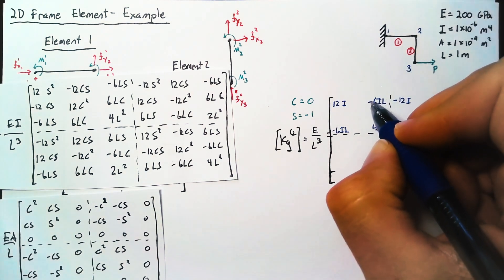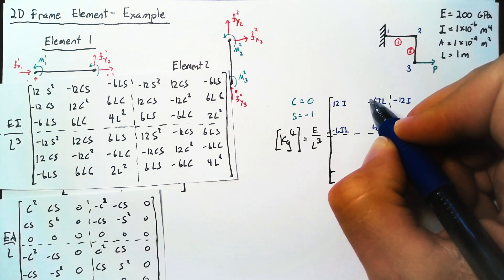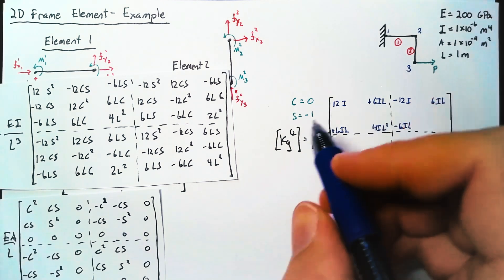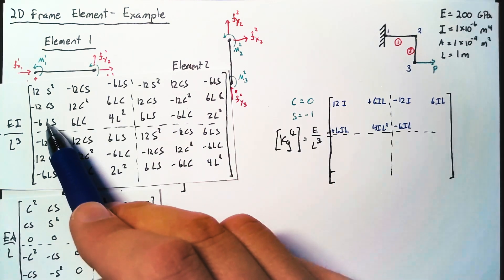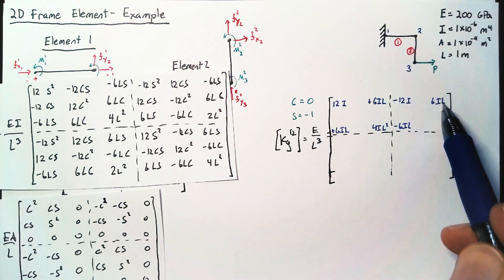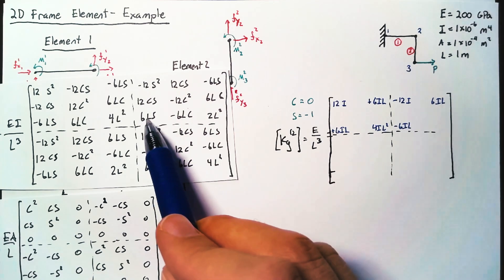And I made a mistake here. These are positive because our sign is negative 1. So these values here will both be positive. Likewise, this is positive, and this point here is negative.